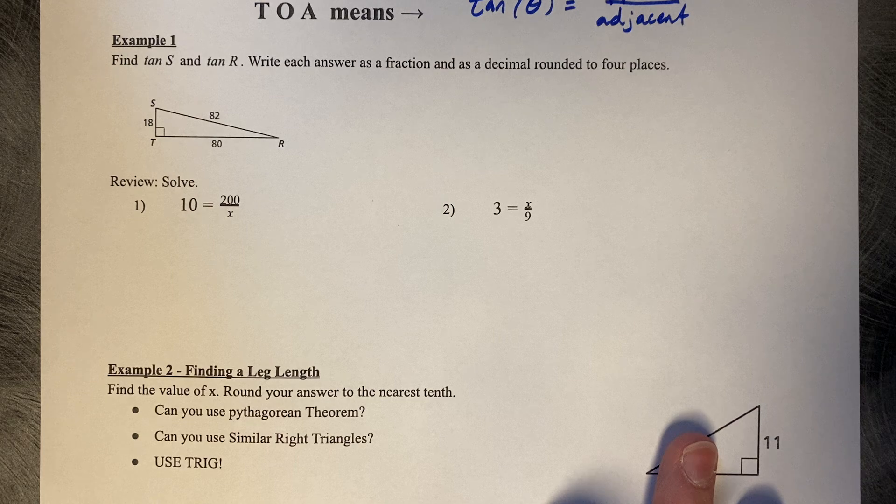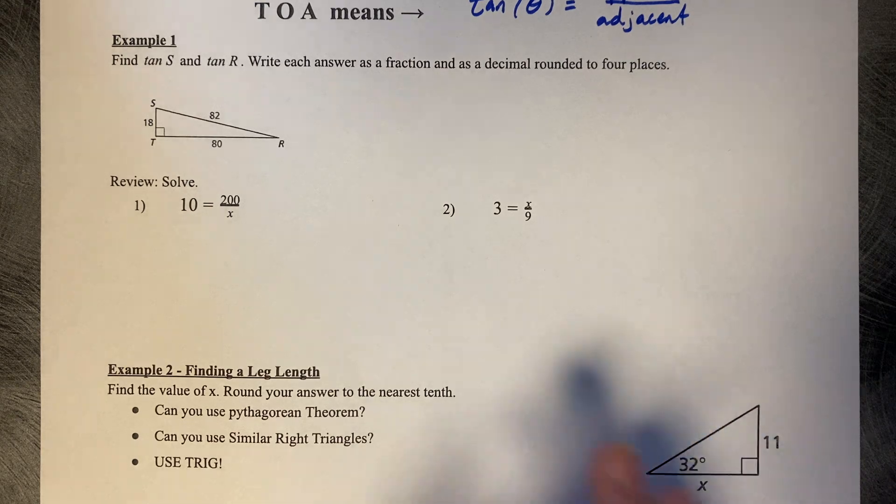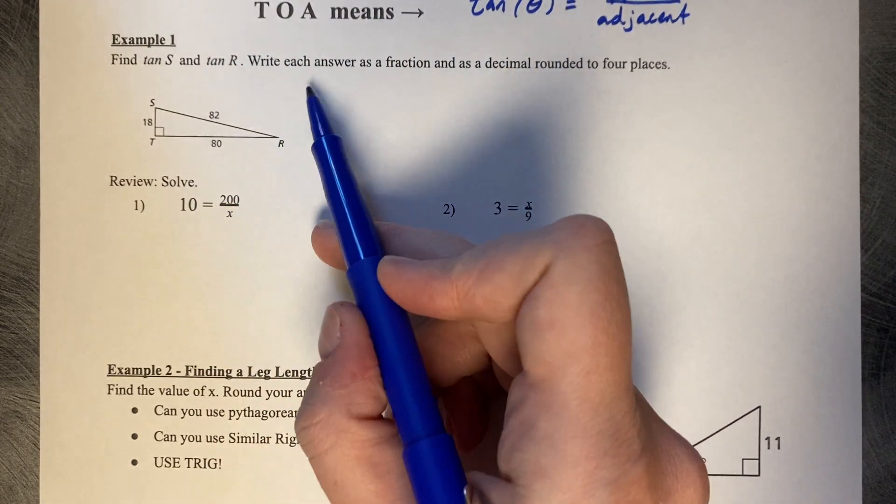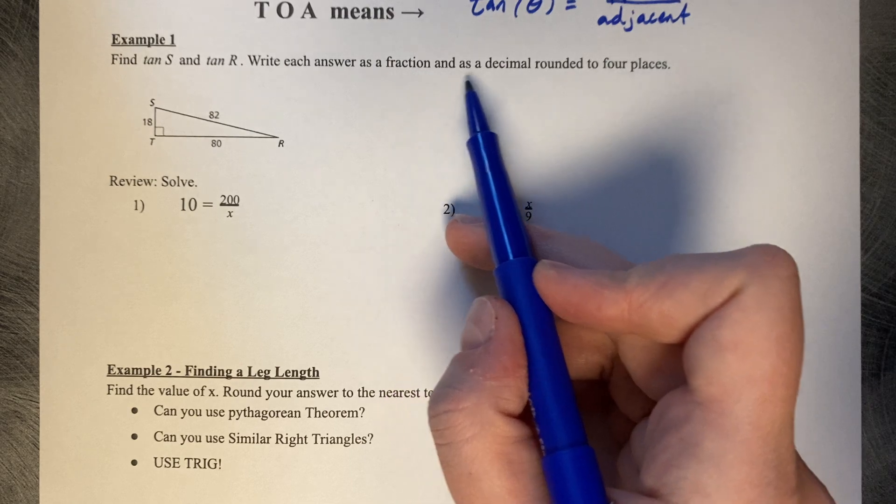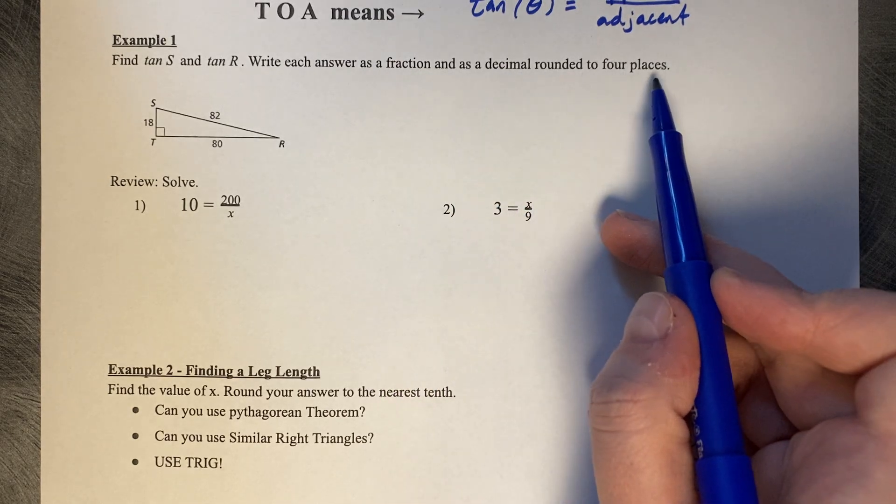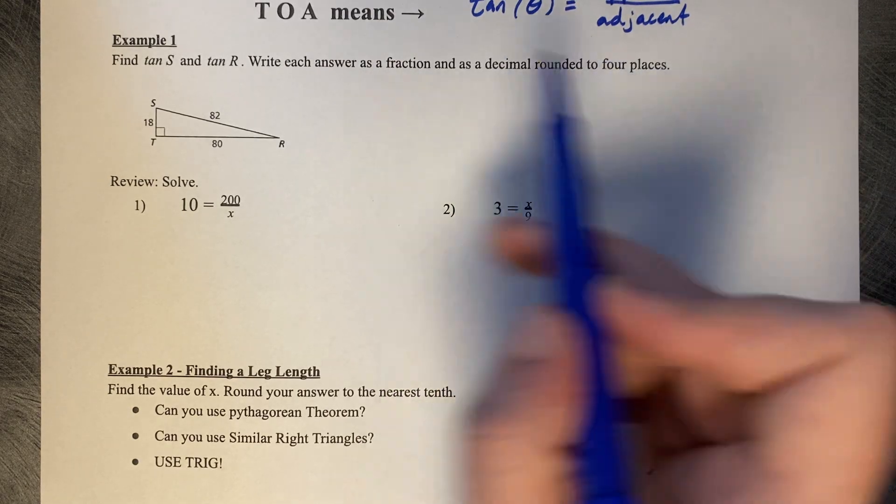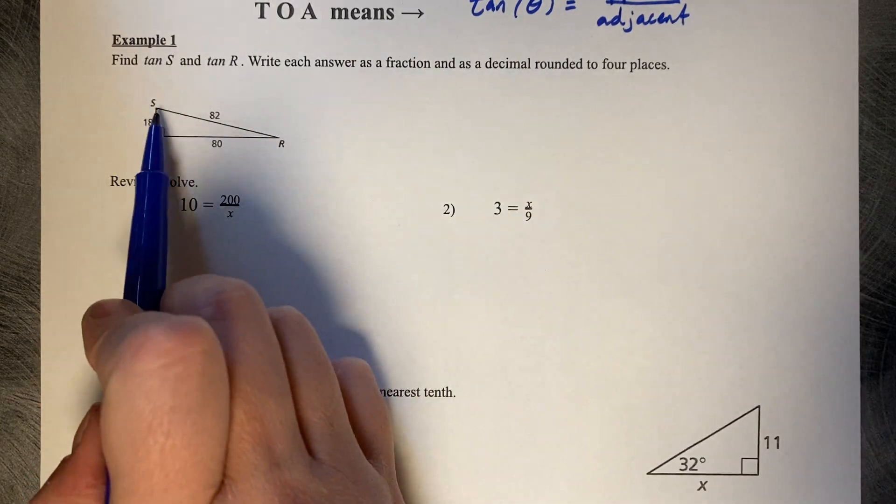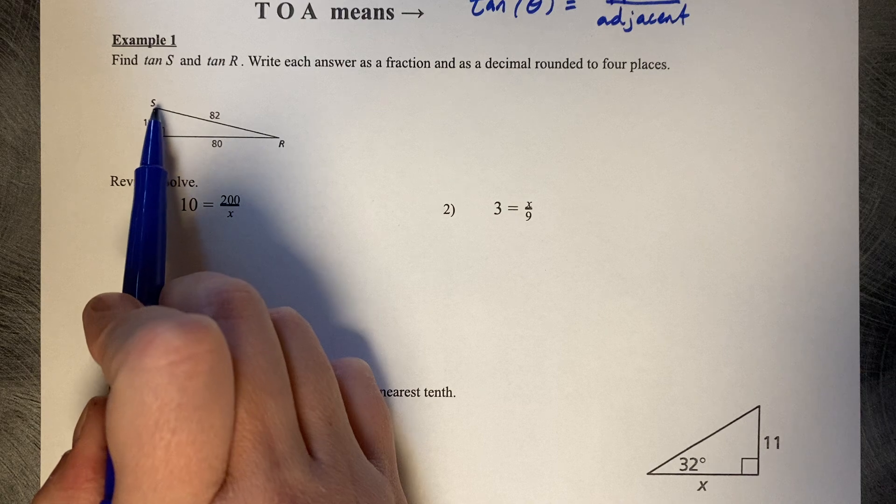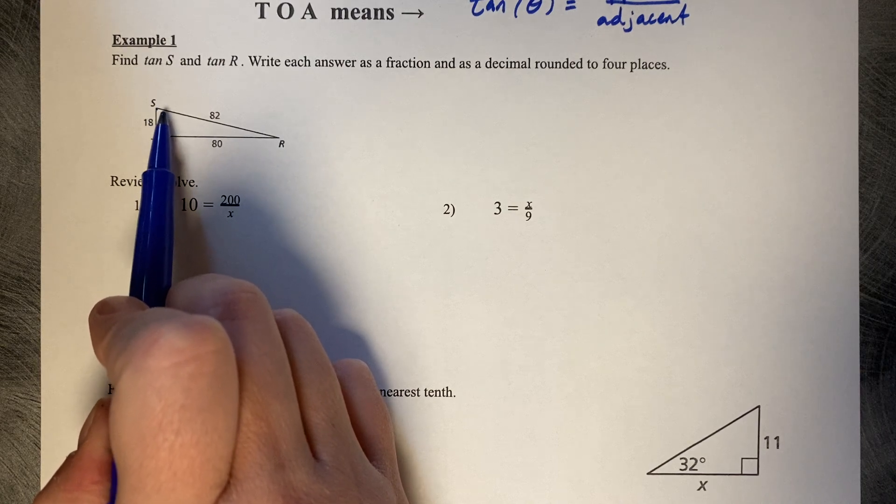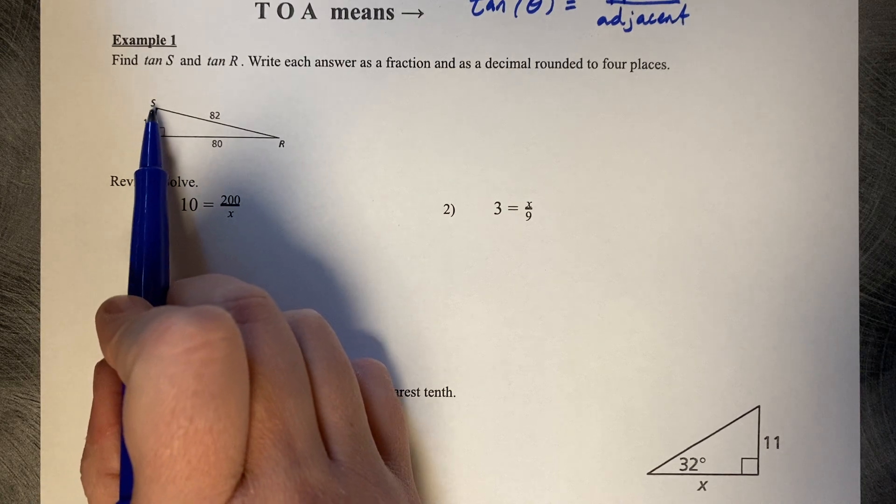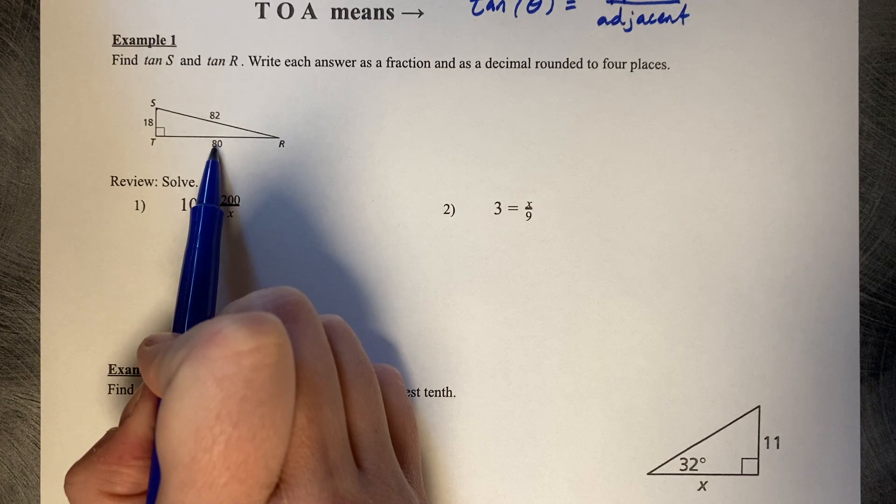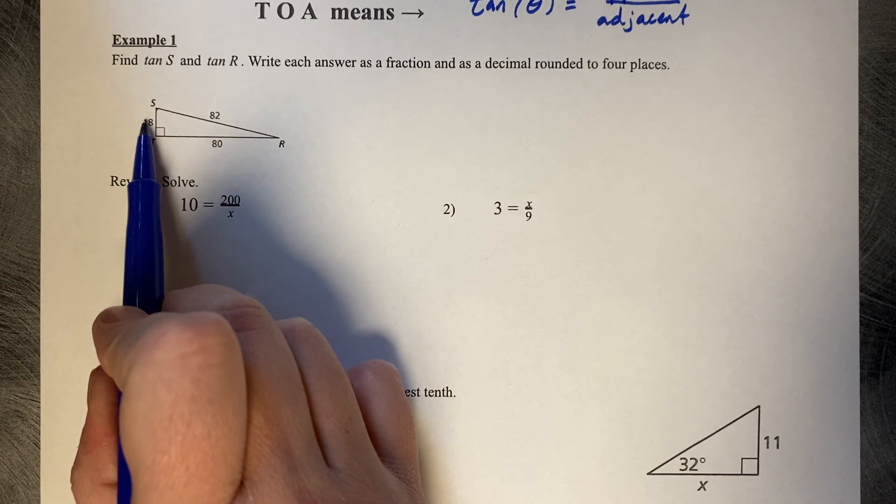Example 1: Find the tangent of S and the tangent of R. Write each answer as a fraction and as a decimal rounded to four places. The tangent of S means we're focused on angle S. If you imagine theta at this angle, then 80 is opposite and 18 is adjacent.